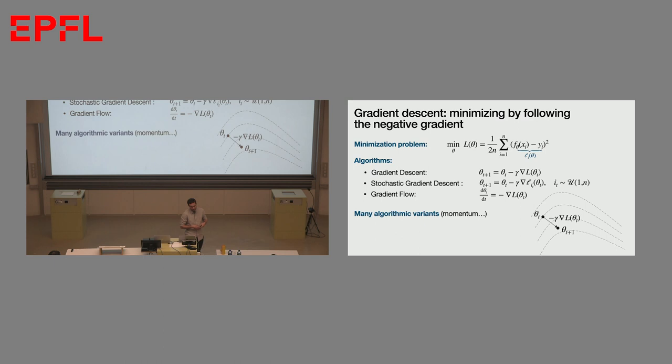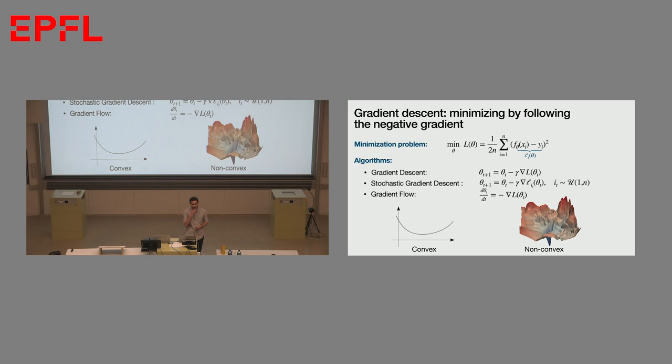The core idea behind all algorithms used in practice — even ChatGPT — is still gradient descent. We train a loss and minimize it with gradient descent, wanting to understand why we obtain a model that generalizes well. The two main classes of problems are: is your function convex or not? If convex, the problem is easy to minimize. If non-convex, you can get stuck in local minima.